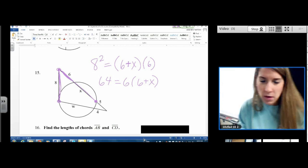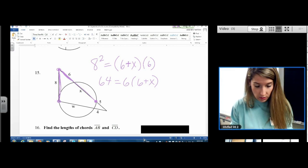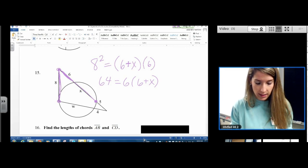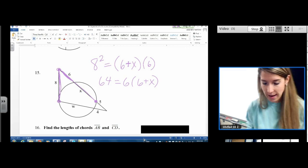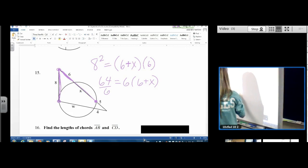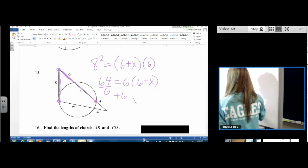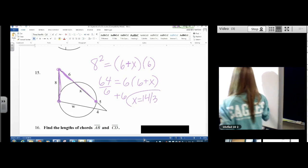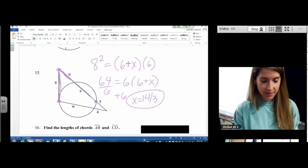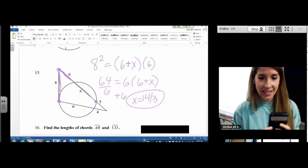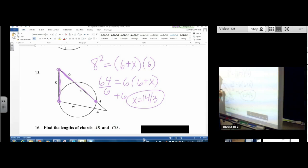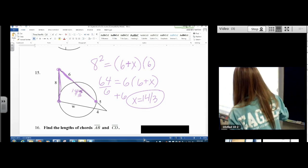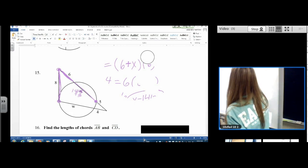So this one is tangent squared equals whole times external. The 6 is the external. 64 equals, once again, I'm not going to distribute. You're welcome to distribute if you like to do that. I'm just going to do 64 divided by 6. And then I'm going to subtract 6. You're going to get a decimal again. 64 is not divisible by 6. So when I divided by 6 and then added 6, I got x is 14 thirds. And that is okay. It is not okay to write 4.7 or 4.67. That is not okay. All right. So now we know x. We know it. We're going to use it. X is 14 thirds. And now I'm going to erase this work.